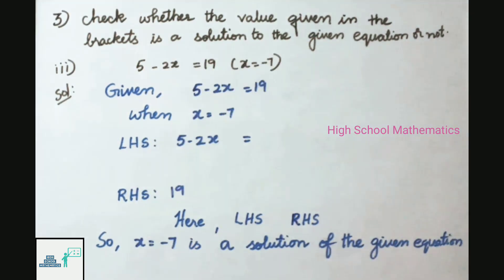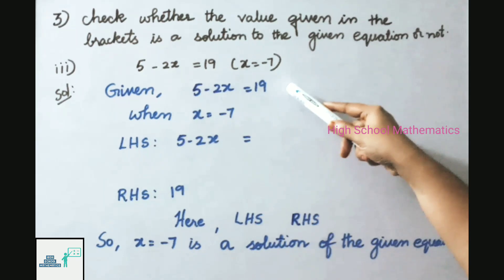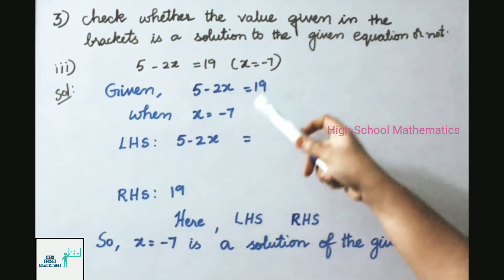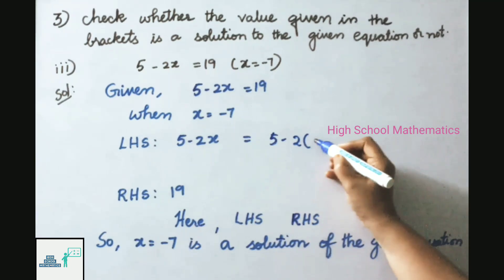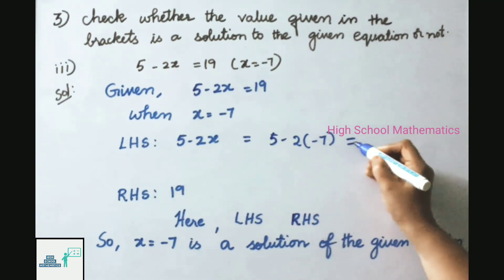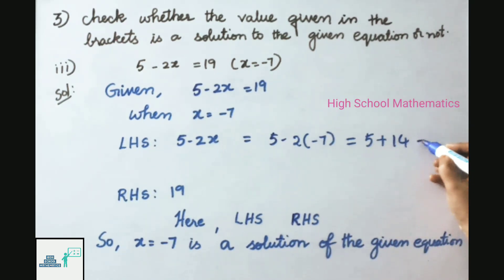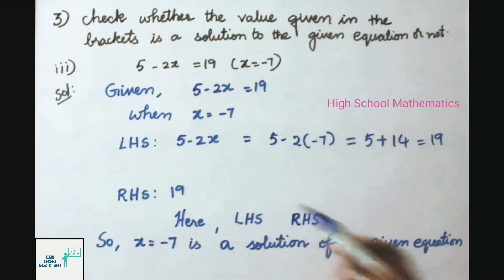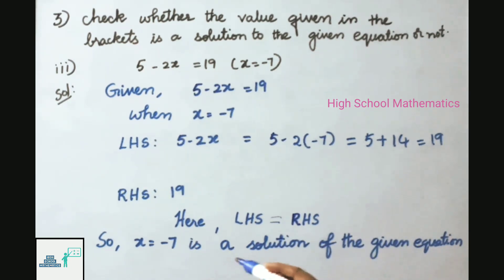Third sum: 5 − 2x = 19, given x = −7. LHS = 5 − 2x = 5 − 2(−7) = 5 + 14 = 19. RHS = 19. LHS equals RHS, so x = −7 is a solution of the given equation.